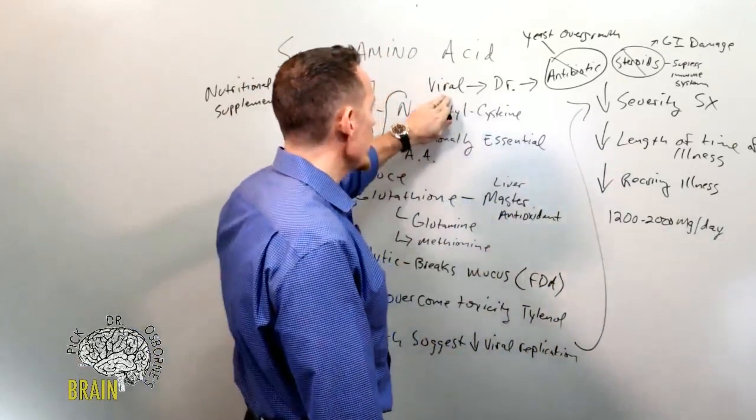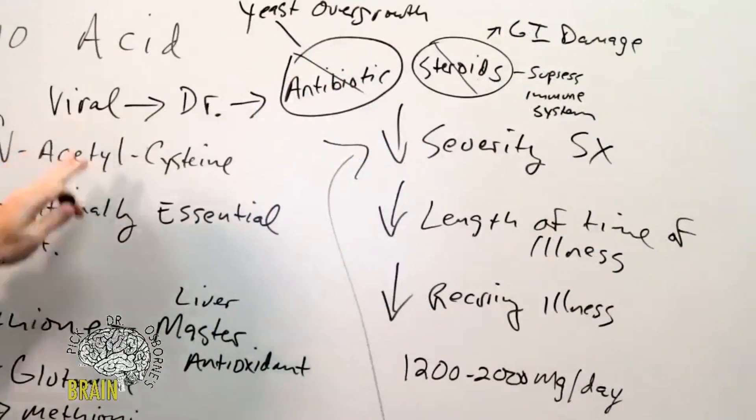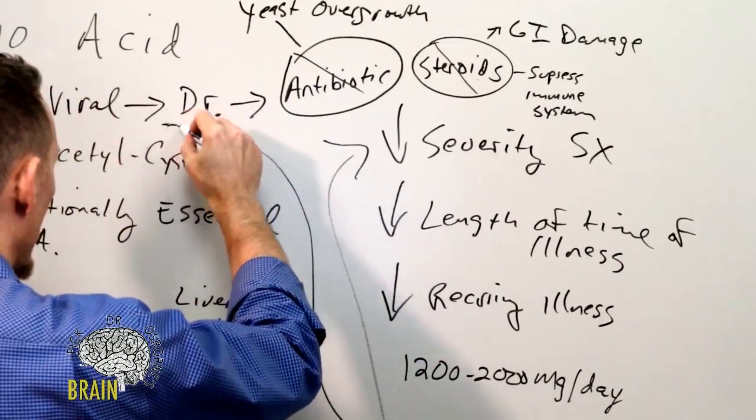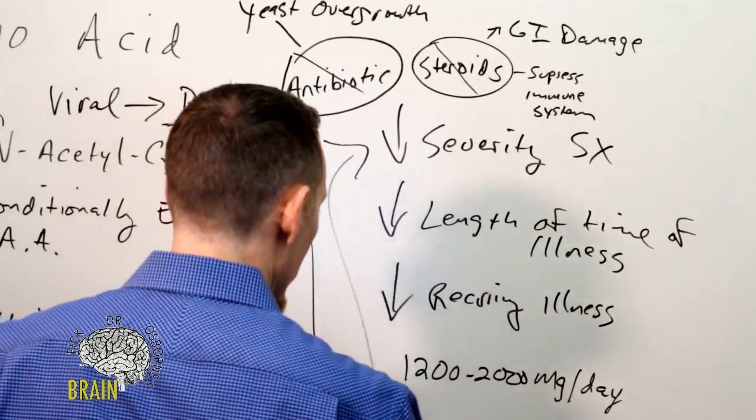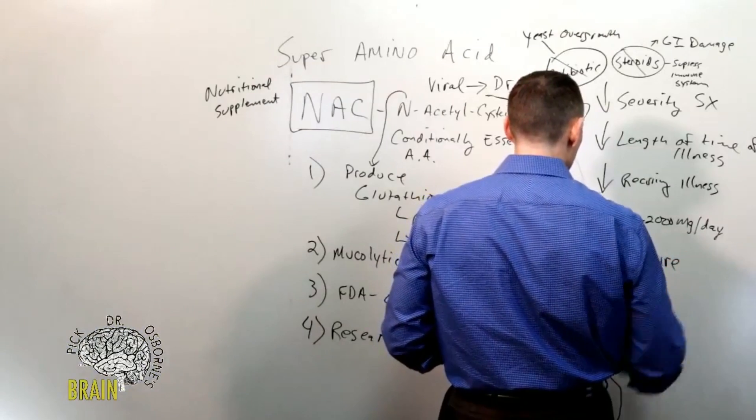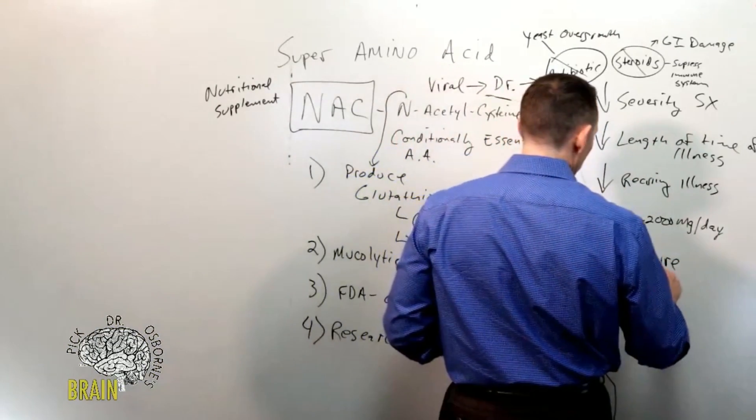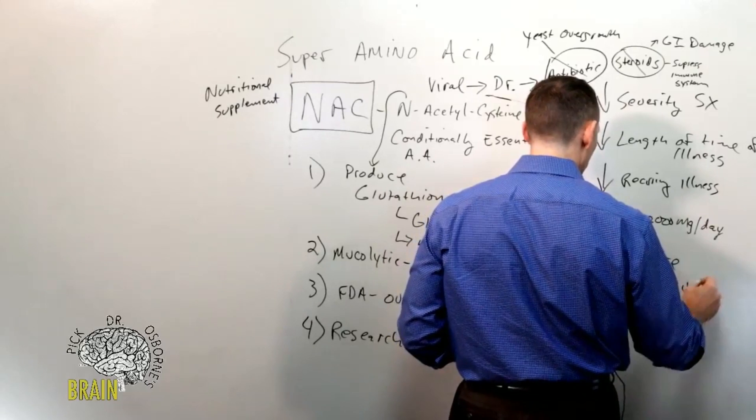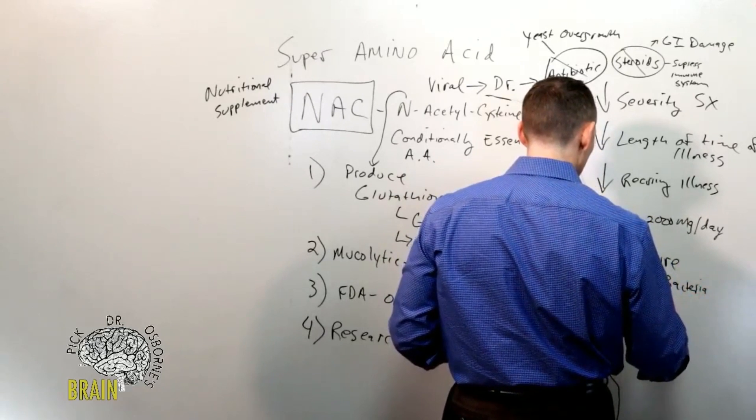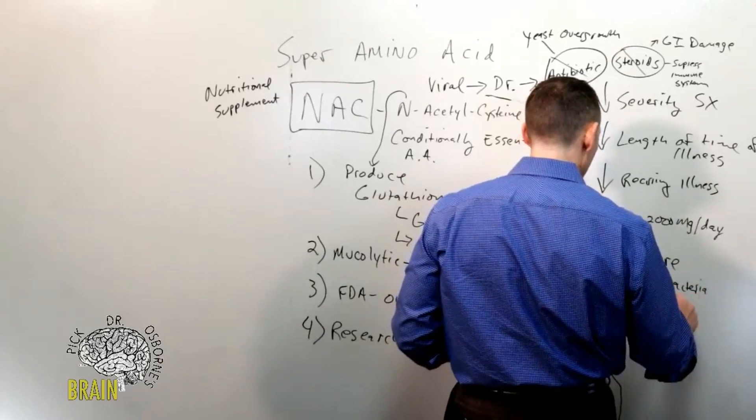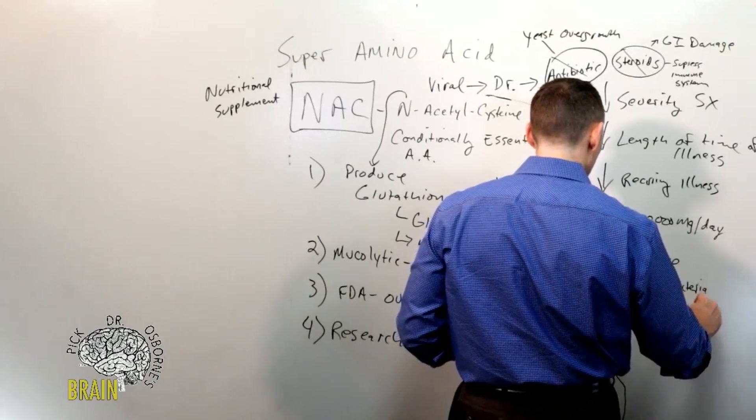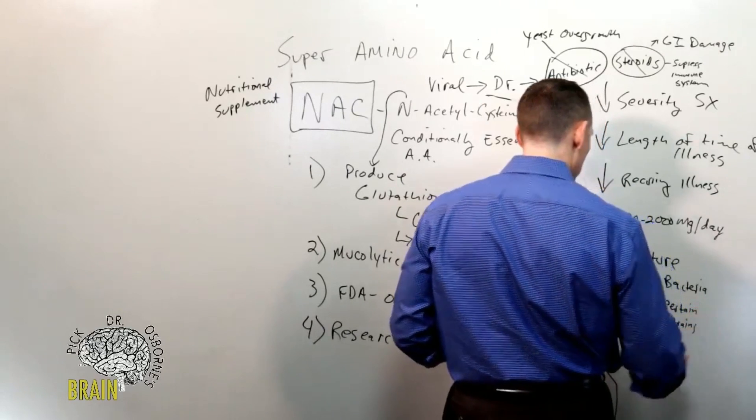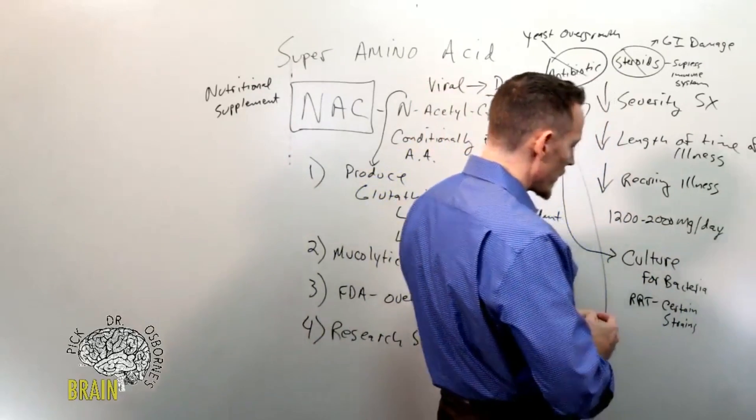If you're going to the doctor and you suspect that you have the influenza or, God forbid, coronavirus breaks out and starts creating a greater degree of spread in the US, one of the things you always want to ask for before taking that antibiotic is ask for a culture for bacteria. Some clinics will have what are called rapid response tests (RRT) where they can check you for certain strains like influenza A or B, certain strains of virus, or they can check for certain types of bacteria rather quickly.